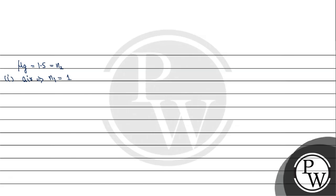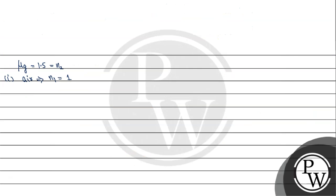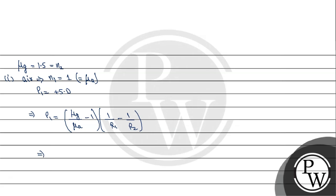The power of the convergent glass lens is given as +5 diopters. So in the first case, P1 = +5 diopters. We can write: P1 = (μg/μa - 1)(1/R1 - 1/R2). Substituting μg = 1.5 and μa = 1, we get: 5 = (1.5 - 1)(1/R1 - 1/R2).